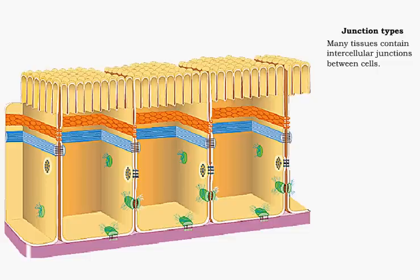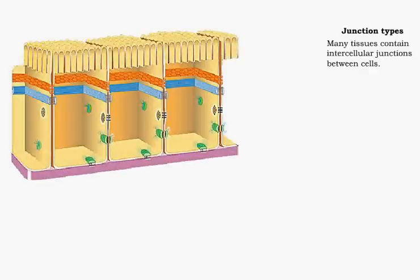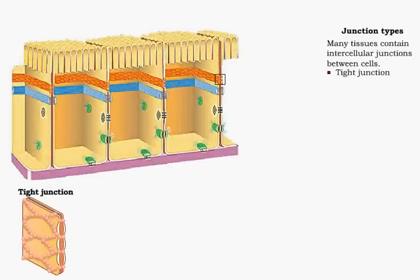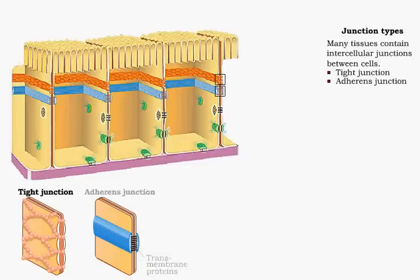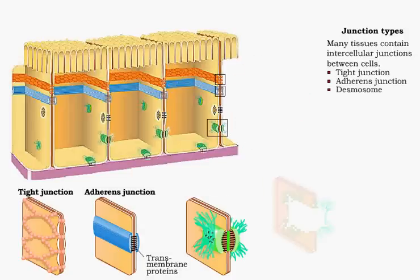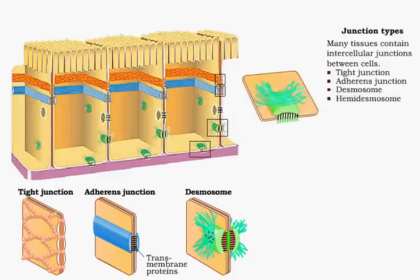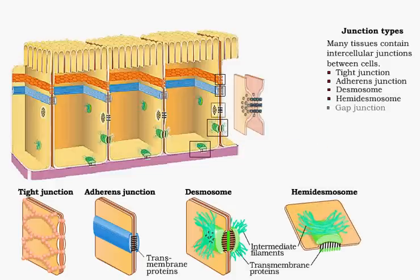The cells of many tissues are joined together by intercellular junctions that are located between the adjacent cells. Most types of epithelium and some types of muscular and nervous tissue contain intercellular junctions. There are five types of intercellular junctions: tight junctions, adherence junctions, desmosomes, hemidesmosomes, and gap junctions.